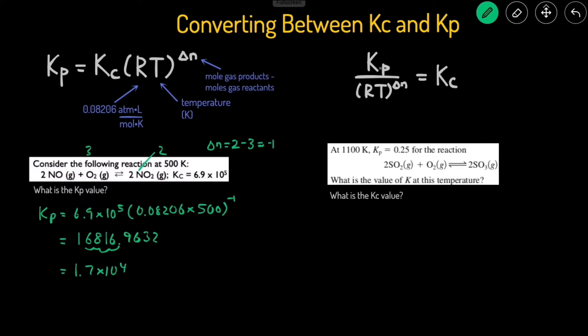Now, if you're given Kp and you want to solve for Kc, you're going to use this equation instead. We can take this equation and just isolate Kc. To do that, we would just divide both sides by RT raised to the power of delta N. So that's how we get this equation.